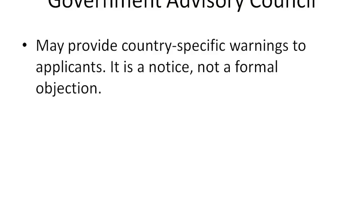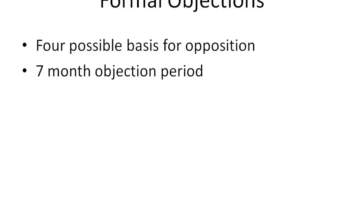As part of the initial application process, there's a government advisory council that can provide warnings if a particular application may cause problems in a particular country. However, this is merely advisory — it's not a formal objection. If a country needs to object, they must do so as part of the formal objection process.